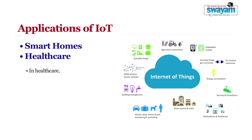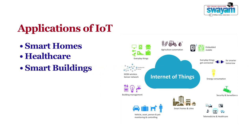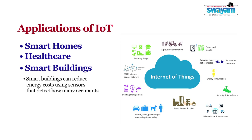In healthcare, IoT offers many benefits, which include the ability to monitor patients more closely and to use the data generated and analyze it. Similarly, smart buildings can reduce energy costs using sensors that detect how many occupants are in a room, and the temperature can be adjusted accordingly and automatically.